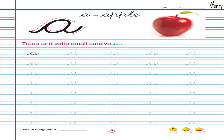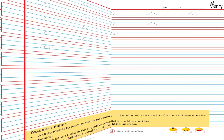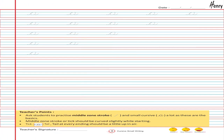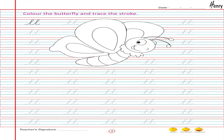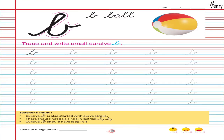A. Apple. Trace and write small cursive A. Color the butterfly and trace the stroke. B. Ball. Trace and write small cursive B.